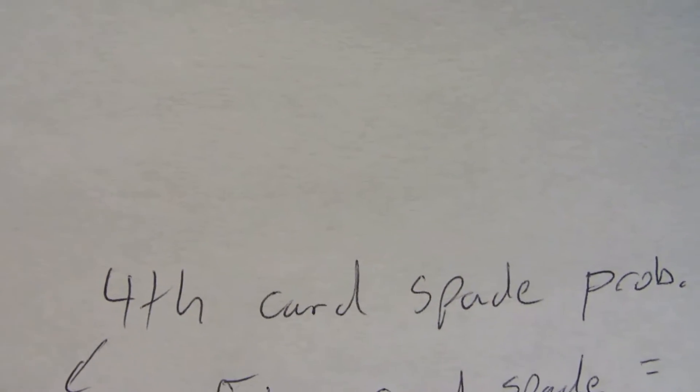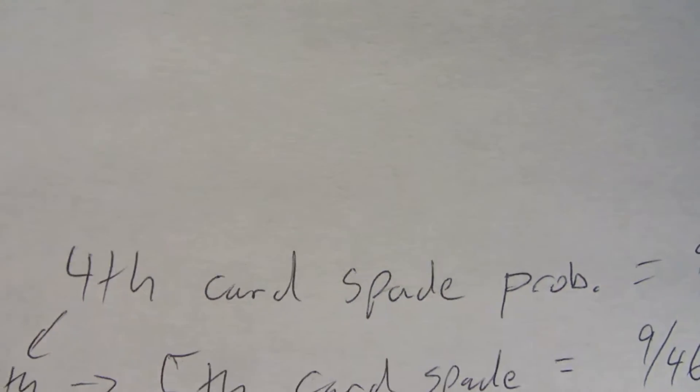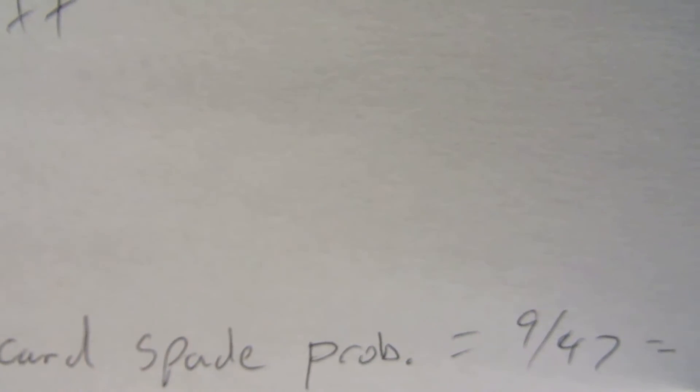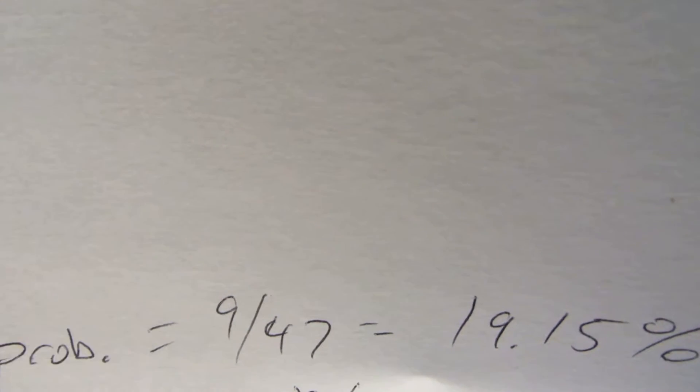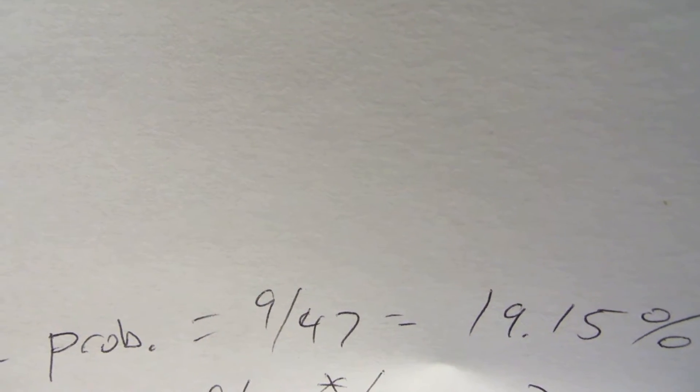So the 4th card could be a Spade. So we have 3 on the board. When the 4th card comes, it could be a Spade. And the probability of that is just, like we just said, there's 9 out of 47 cards. About 19.15%. So you'll get the card you want 20% of the time almost. Or about 1 5th of the time.